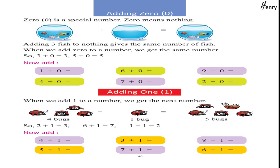Adding one. When we add one to a number, we get the next number. Four bucks plus one buck equals five bucks. So, two plus one equals three; six plus one equals seven; one plus one equals two. Now add.